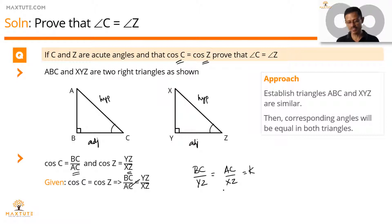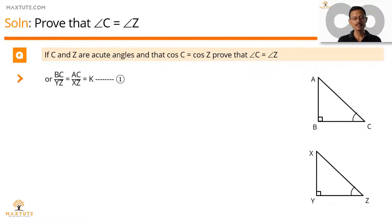We are going to carry over this information to the next slide. This is what we have: BC by YZ is equal to AC by XZ is equal to K. What we are going to do is we are going to use Pythagoras theorem on both these triangles and compute the value of AB and XY. Before that, we can say BC is equal to K times YZ, cross multiplying this, and AC is equal to K times XZ. So we have established these two in terms of XZ and YZ.